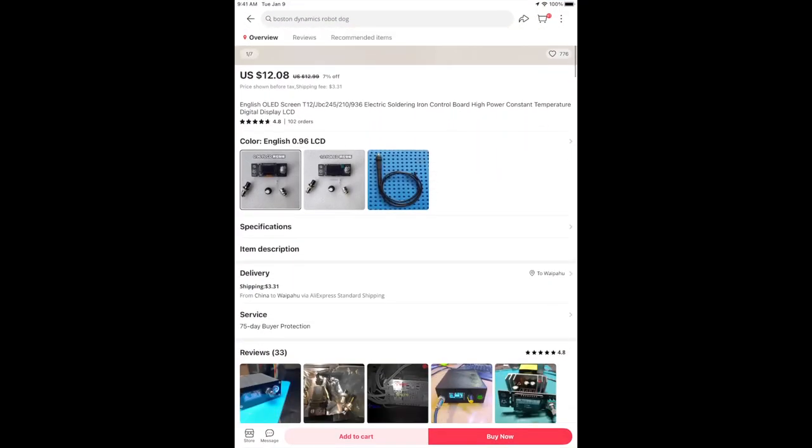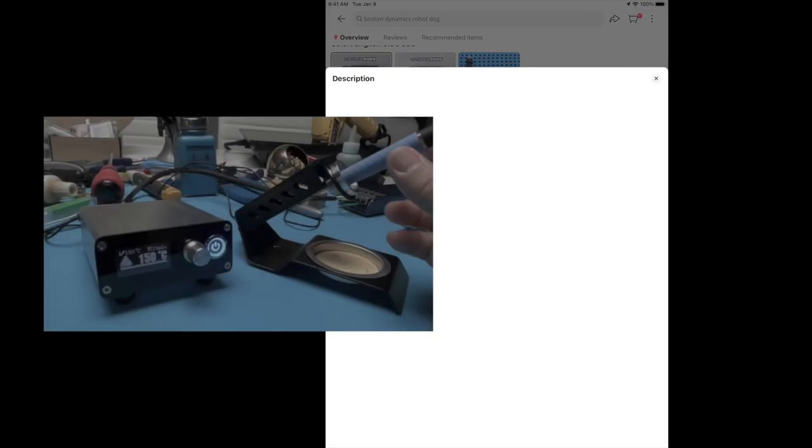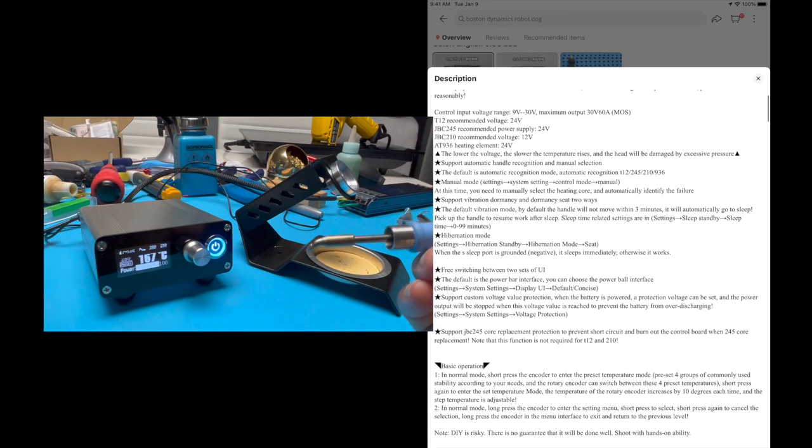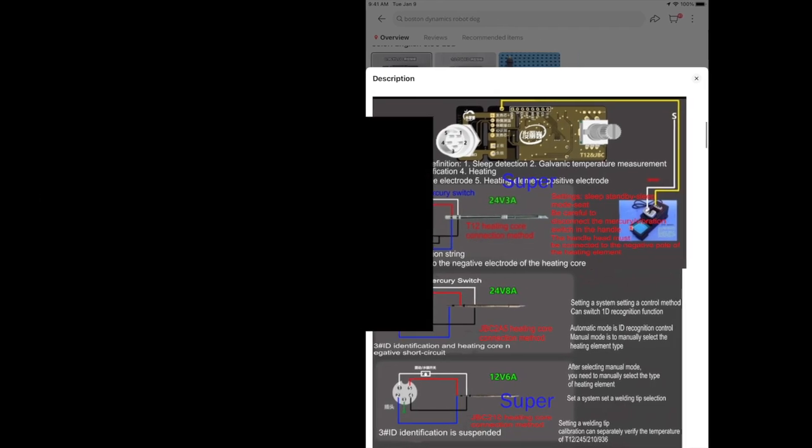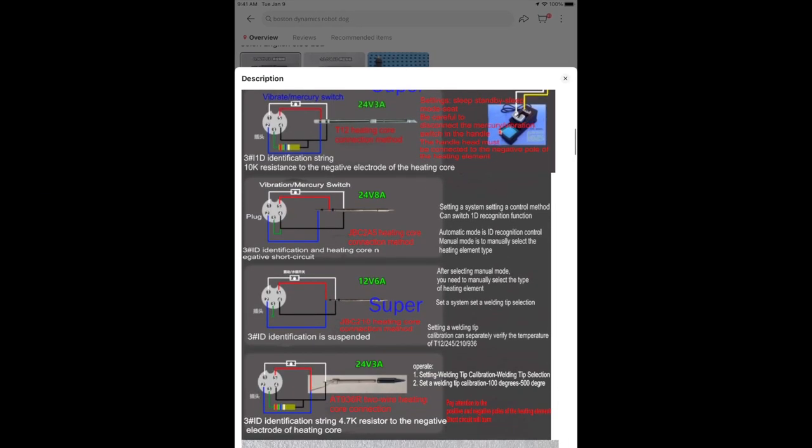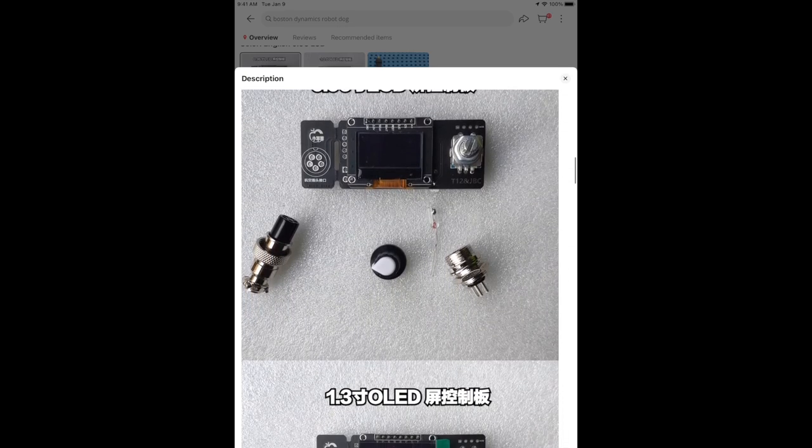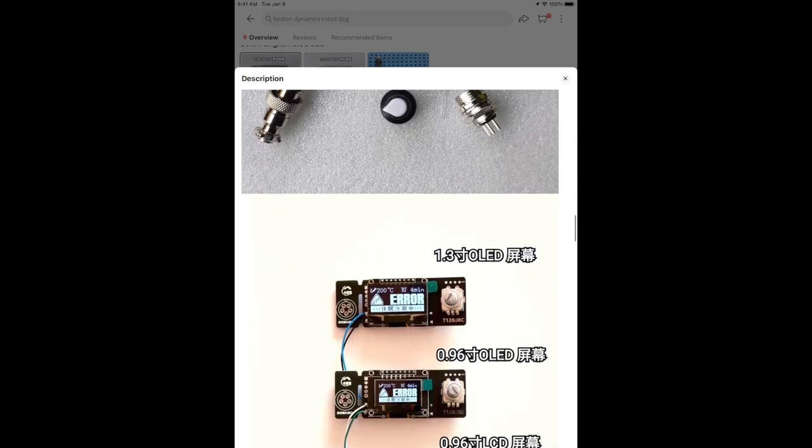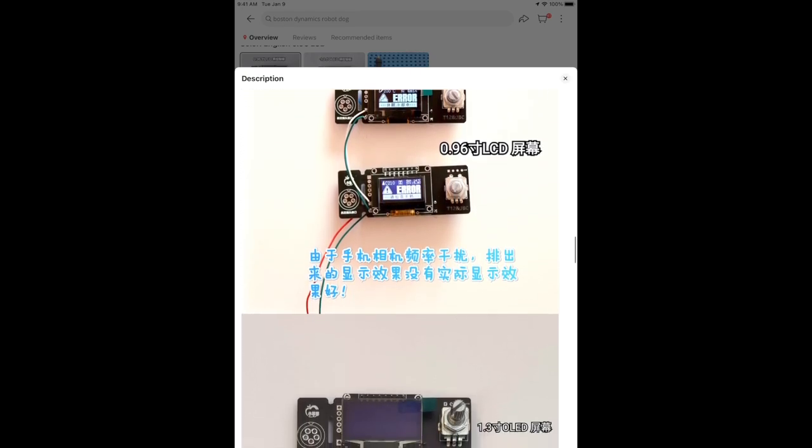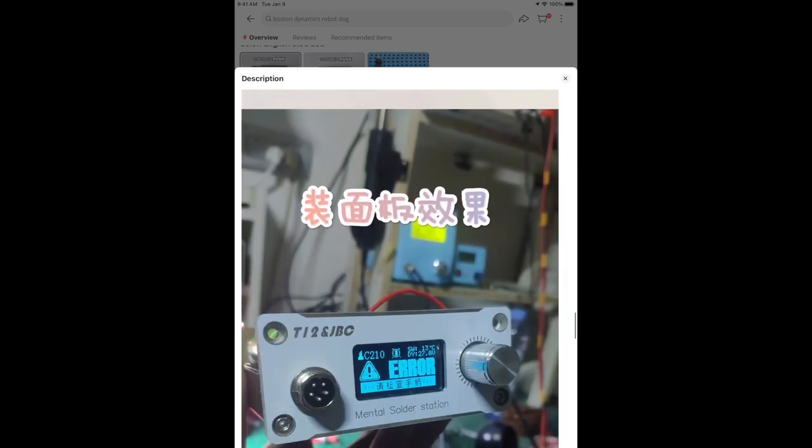This is the controller used for the custom soldering station featured at the beginning of the video. Here are the instructions on how to wire the various handles for the controller. There are also various screen sizes and types to choose from. You can also find other controllers which provide different screen sizes and screen colors on AliExpress.